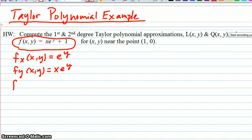Now we need the second partials. So second partial with respect to x is 0. f sub yy at (x,y) is x e to the y, same as it was before. And f sub xy at (x,y) is equal to e to the y.